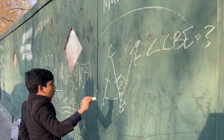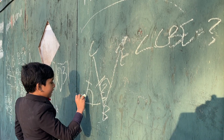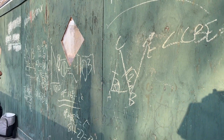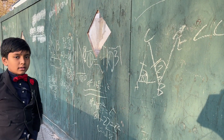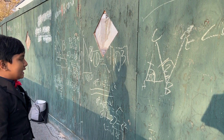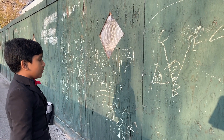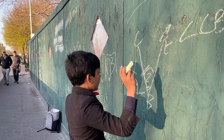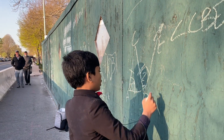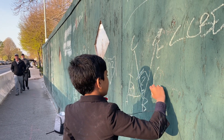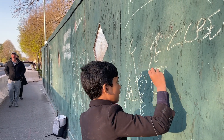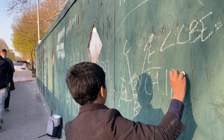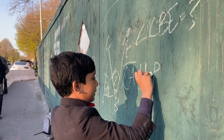The only thing given is angle CAB equals 70 degrees, other than, of course, the sides. And one more thing: CA is parallel to BE.